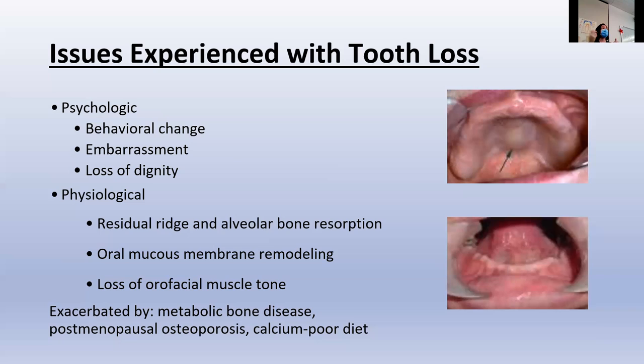If somebody is going through a lot of changes in their ridge, they're going to need a lot of soft denture relines or maybe even a whole new impression if things change dramatically enough. Generally, bony changes in the mandibular arch differ significantly from those in the maxilla. The resorption rate is four times greater in the mandible than the maxilla — that's a good exam question. Highlight that: resorption rate four times more in the mandible than the maxilla.